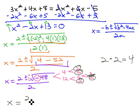So, for our final answer, we have 2 plus or minus 4i, which accounts for the negative, times the square root of 3, all over 2.